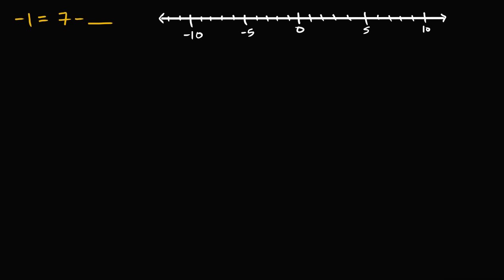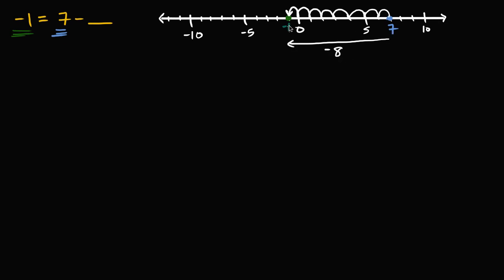Let's think about what's going on. We are trying to get to negative one, and we are starting at seven. So what do we have to subtract from seven to get to negative one? Well, we have to move one, two, three, four, five, six, seven, eight — eight to the left. So we just subtracted eight from seven to get to negative one. We need to subtract eight.